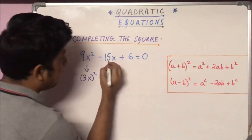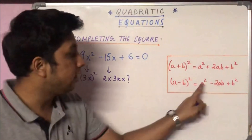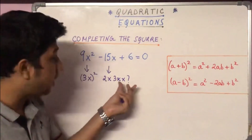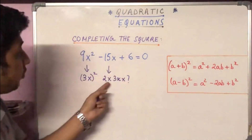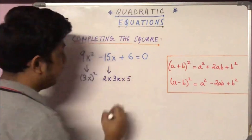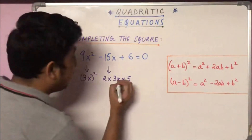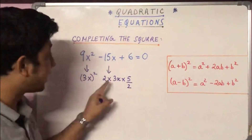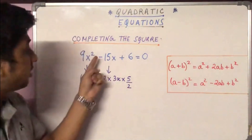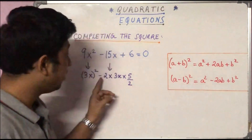So 15x should be expressed as 2 × 3x × something. Since a is 3x, we need: 2 × 3x × b = 15x. We know that 3 × 5 = 15, so b = 5/2, because 2 × 3x × (5/2) gives us 15x. So the middle term -15x is expressed as -2 × 3x × (5/2).